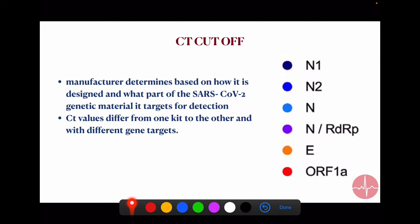We can see that there are different viral genetic materials routinely tested like N gene, E gene, and ORF gene. Different kits detect different genes, and that's how the CT value will differ among the different genetic material. The CT value differs from one kit to another and with different genetic targets.